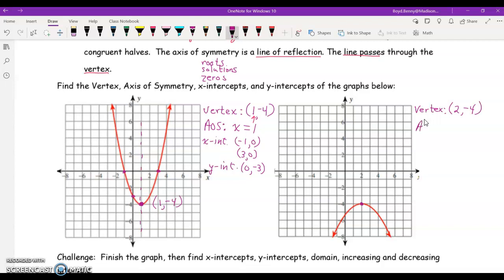The axis of symmetry, and I'll just abbreviate that AOS again, is the equation x equals 2. So, the x-intercepts, notice that this graph does not cross the x-axis. There are no x-intercepts, so this would actually have no solutions.